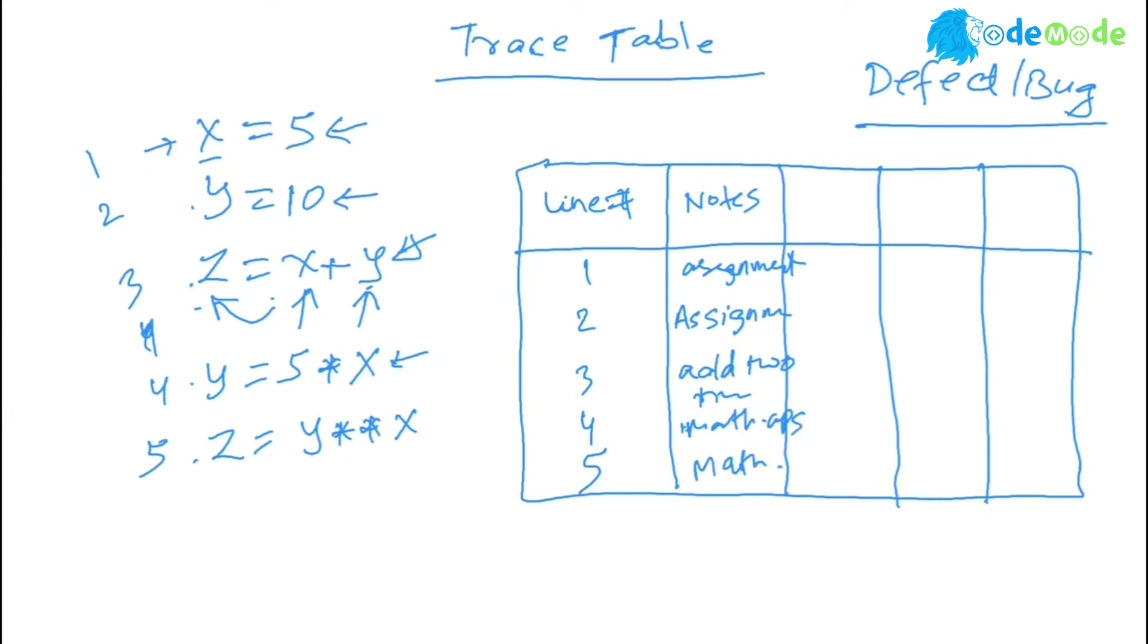What is important is remaining columns. Look at the number of variables you use in your programs, and you will have those many columns. Right now, you have x, y, and z. If you look at the total number of unique variables, this is what it goes.